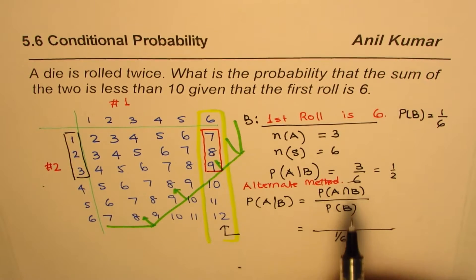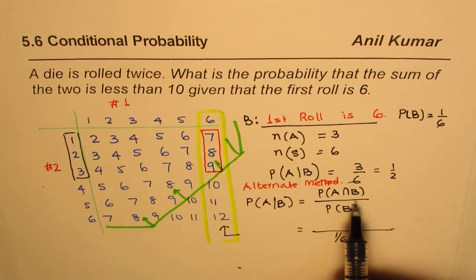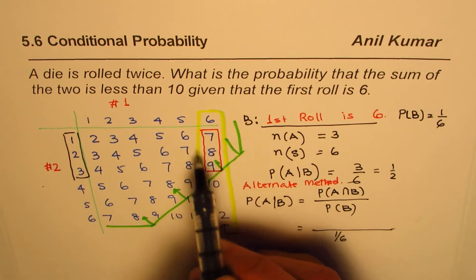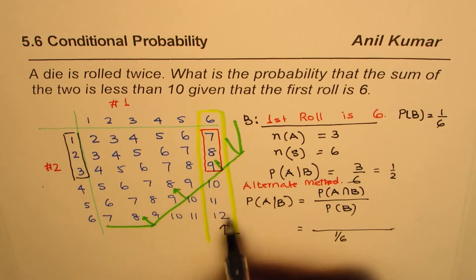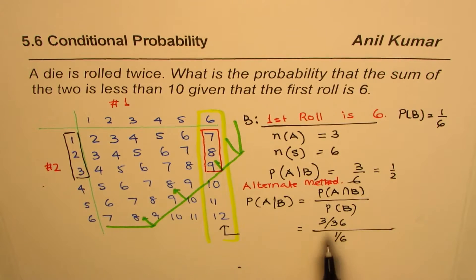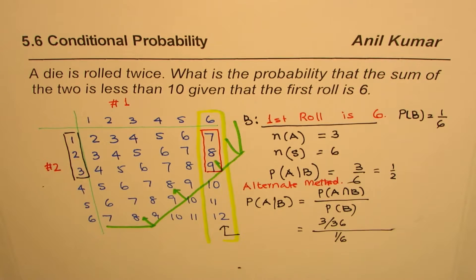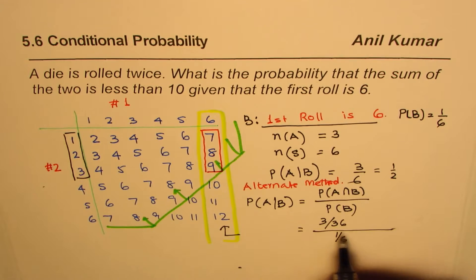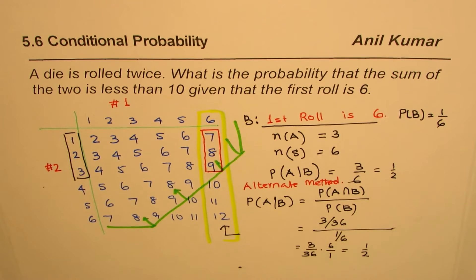The probability of the intersection of A and B — those three outcomes — out of all 36 possible outcomes is 3 out of 36. These three options, out of 6×6=36 total options, give a sum less than 10. Solving this: (3/36) ÷ (1/6) = (3/36) × (6/1) = 1/2. You get the same result — the probability is one half.